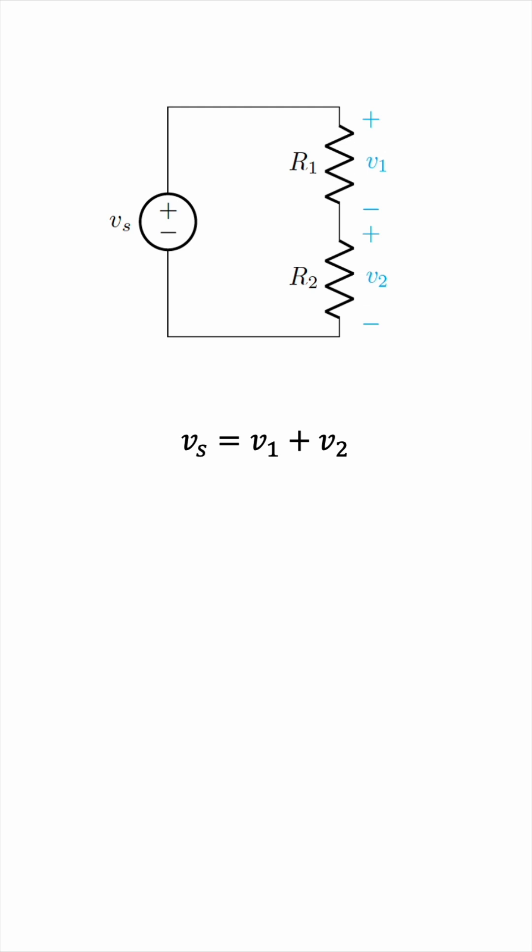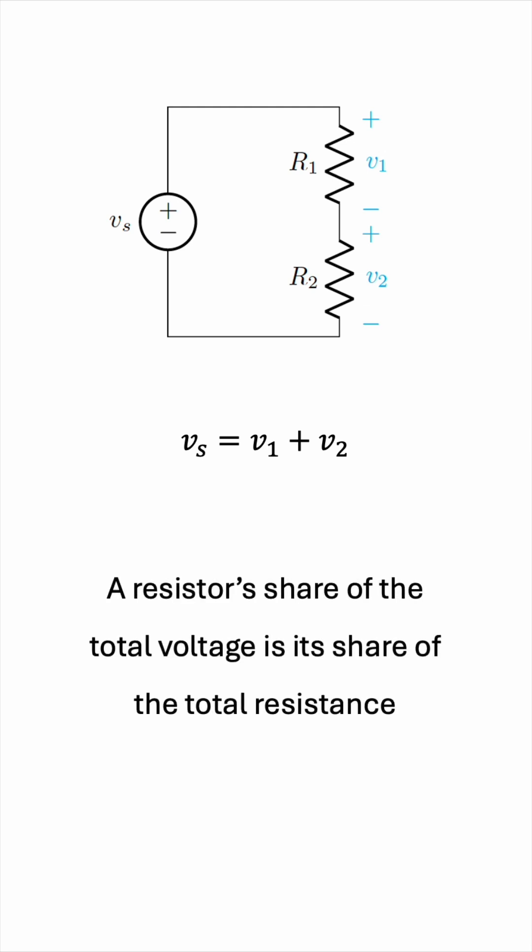The voltage divider rule says that a resistor's share of the total voltage is its share of the total resistance, meaning each series resistor will get a fraction of the source voltage, and that fraction is the ratio of resistances.